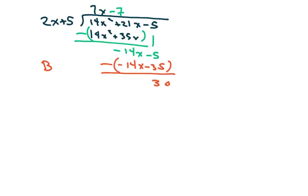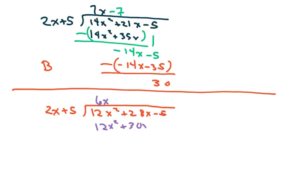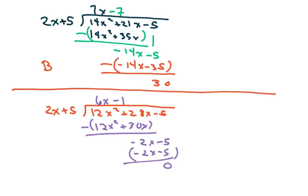The remainder should be 0 if it's a factor, and it's not for b. If you want to check option c, I'll set it up. Dividing by 2x + 5: first term is 6x, giving 12x² + 30x. Subtract to get -2x - 5. The next term is -1, giving -2x - 5, and that does give 0 when you subtract. So c is the correct answer.